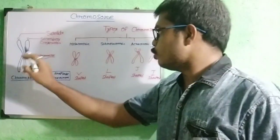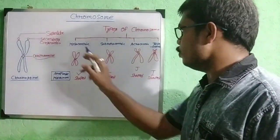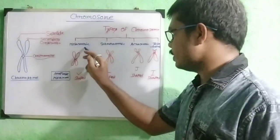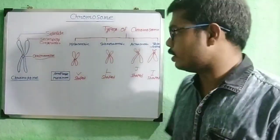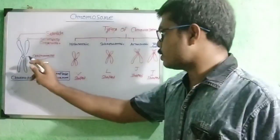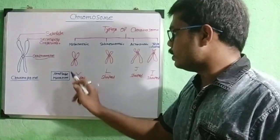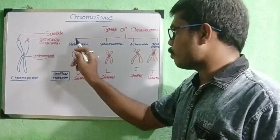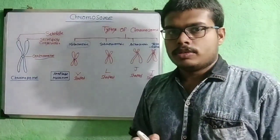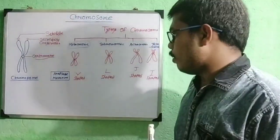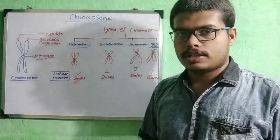According to the position of centromere, the chromosome is divided into four classes: metacentric, submetacentric, acrocentric, and telocentric. When this centromere is at the center of the chromosome, this type is known as metacentric chromosome. At the time of anaphase movement, it shows a V-shaped structure.